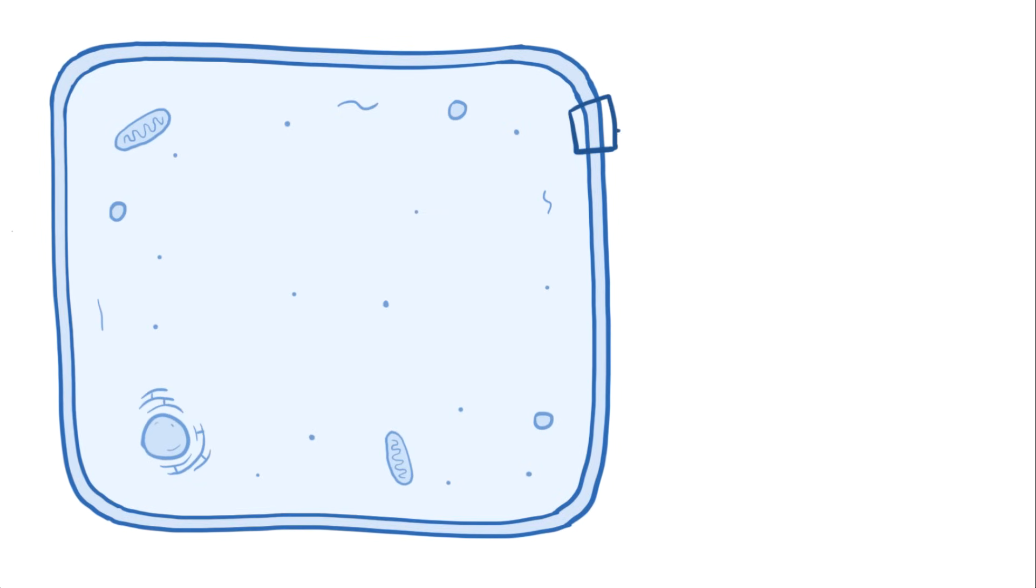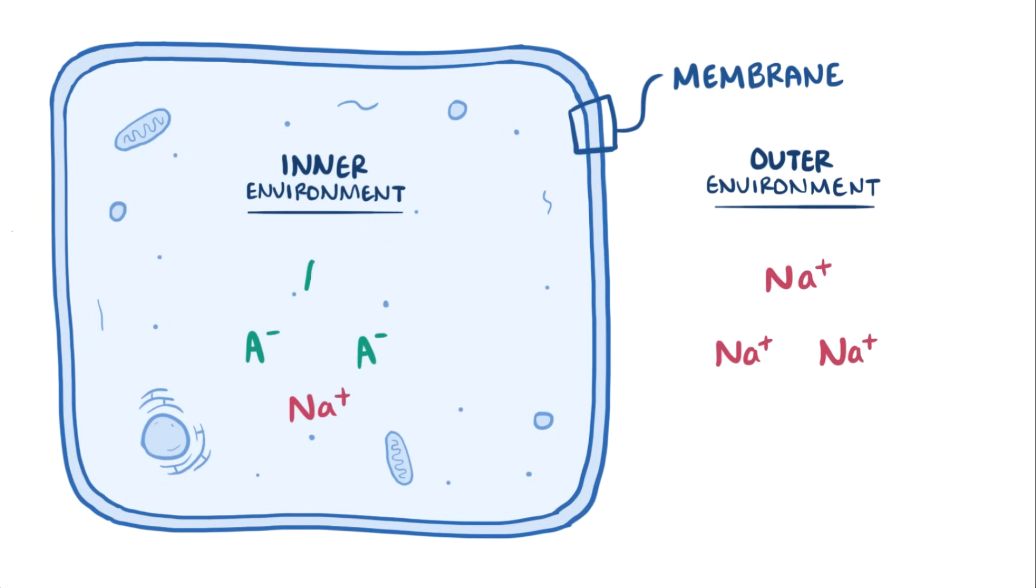Each cell in the human body is wrapped in a membrane that separates the inner environment from the outer environment, and positively and negatively charged ions aren't equally distributed on both sides of the membrane. Fundamentally, it's these differences in concentrations and charge as well as permeability across the membrane that establishes the cell's resting membrane potential.